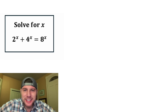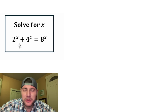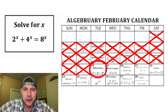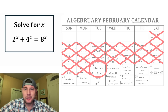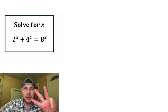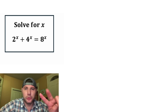Hey guys, this looks like a fun one. It says solve for x. We're given 2 to the x plus 4 to the x is equal to 8 to the x. This is day 18 of our Algebra February calendar. For the month of February, we're going to solve 28 Algebra problems. If you want to try this one, pause it right now, because I'm going to solve it in 3, 2, 1.